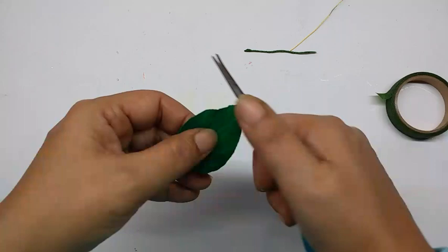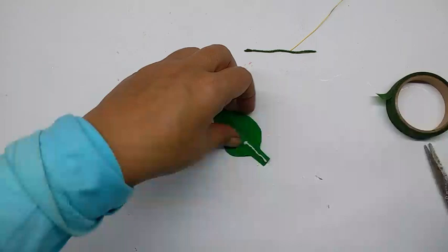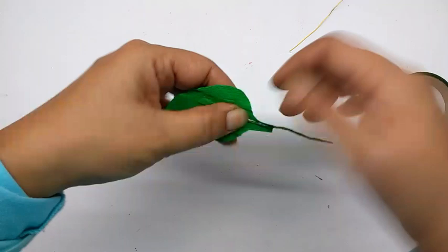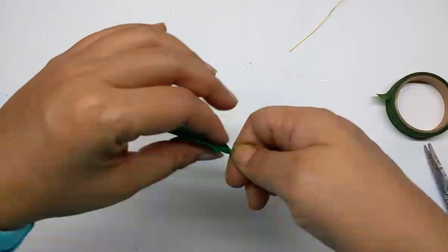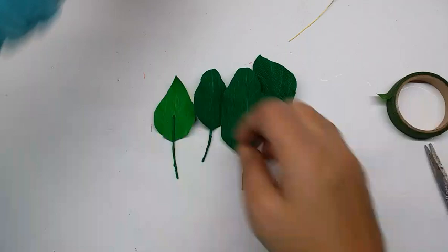Like this, and then just curl the tip just a little bit. Now turn it over, apply glue in the center, and stick this wire that we made while rotating the stem of the leaf. So you get a leaf like this. I've made others the same way.